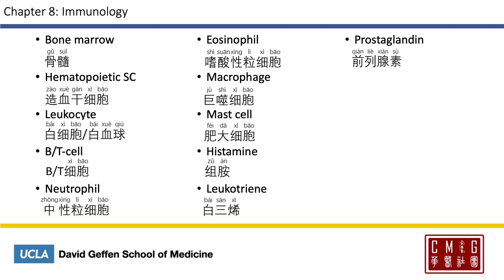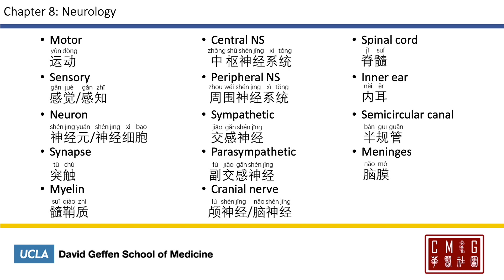Prostaglandin is 前列腺素. You may need to explain to the patient that prostaglandin doesn't come from the prostate: 前列腺素并不来源于前列腺. For neurology, motor is called 运动.